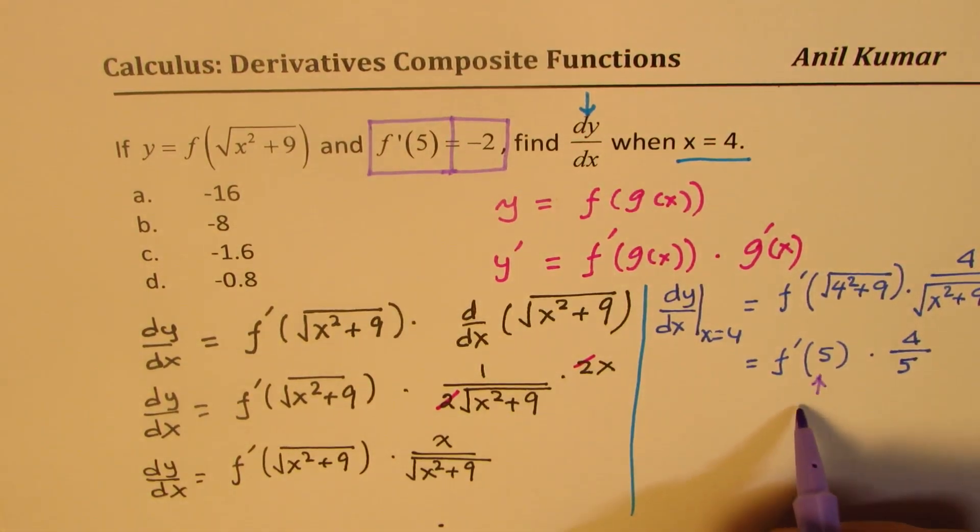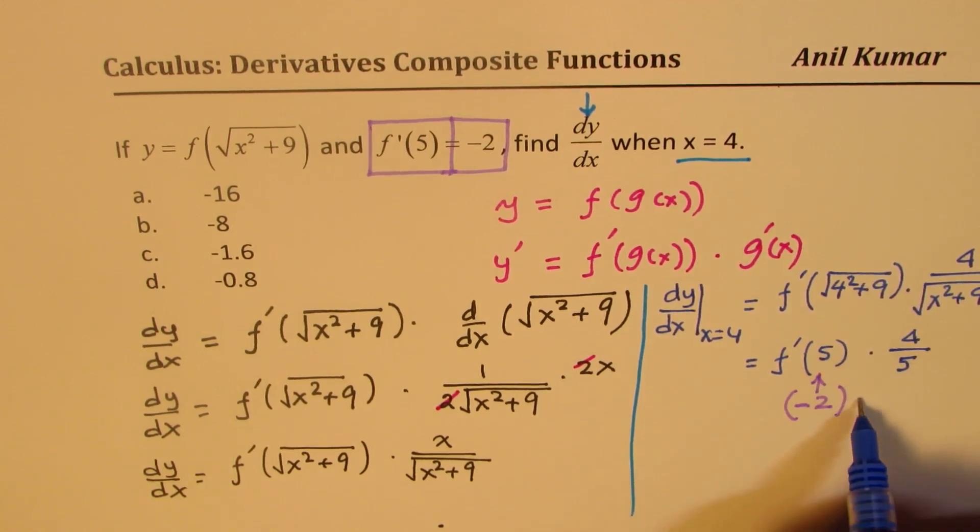So we'll replace this by minus 2, right? So we get minus 2 times 4 over 5.